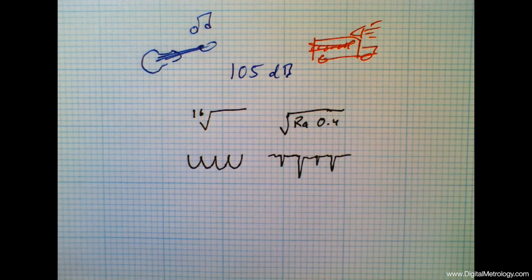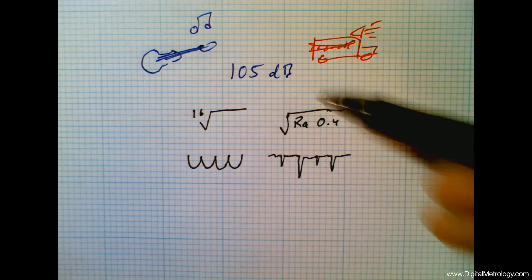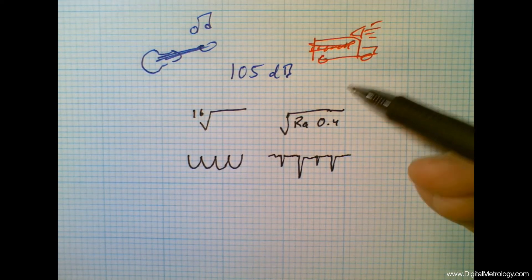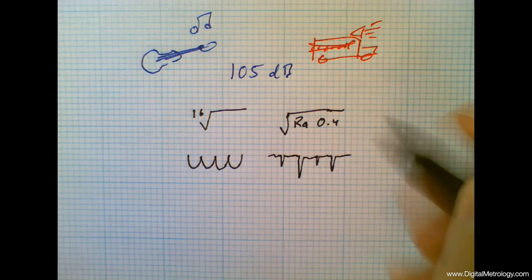Now this thing that we call RA, average roughness, we can kind of think of it like decibels. It's kind of how much of something do we have? How much roughness do we have?